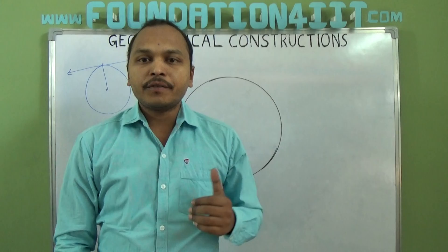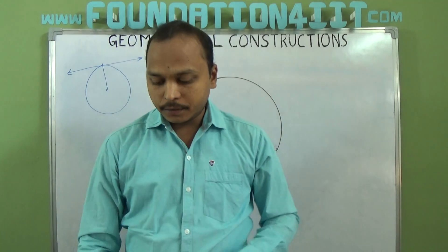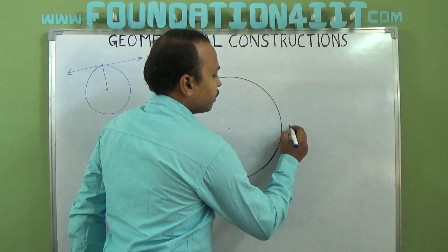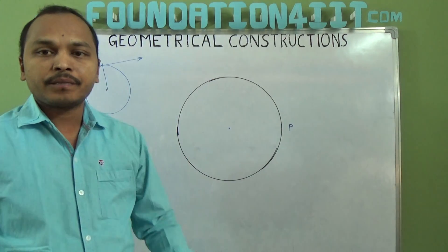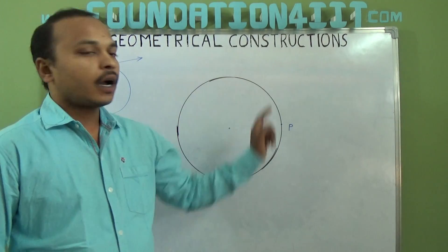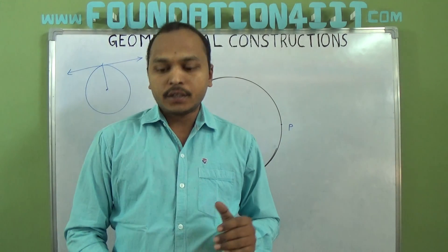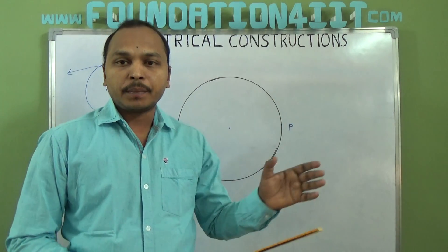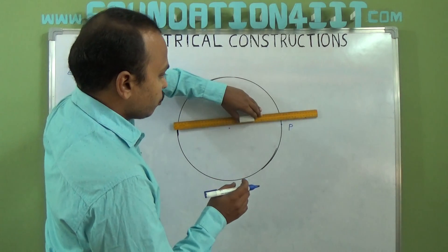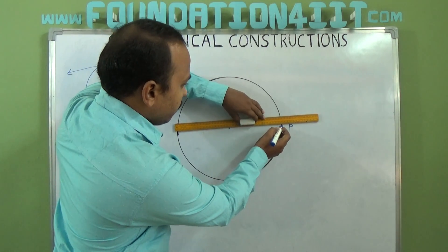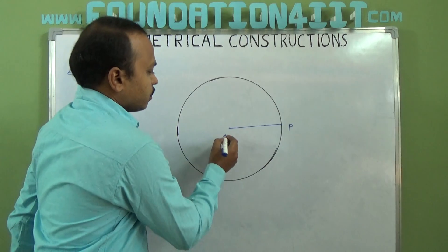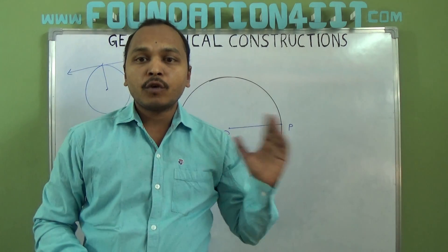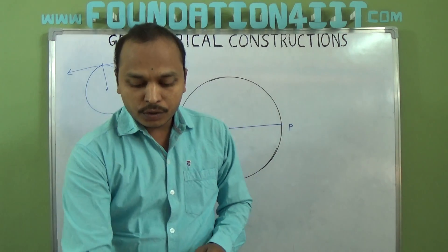For this circle we need to draw a tangent at any point. For example, I need to draw the tangent at point P on the circle. So first of all, we'll join the center O to point P. O is the center of the circle and OP is the radius.